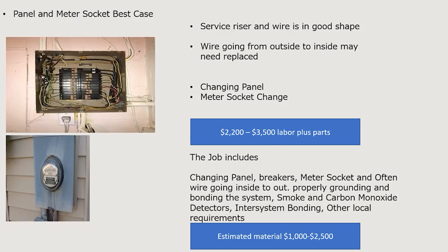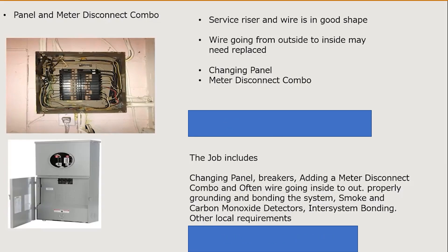Scenario three is the panel and meter disconnect combo — a very common scenario in the 2020 and 2023 code cycles because everything requires that emergency disconnect. We'll likely need to reconfigure the wire going into the home. We assume the service riser and wire outside are in good shape, though the wire from outside to inside may need to be replaced or a fourth wire added. This includes the panel change and installation of the meter disconnect combo. Estimated labor: $2,500 to $4,500. Estimated material: $1,500 to $3,000.